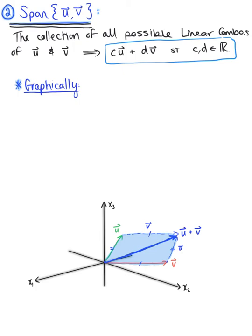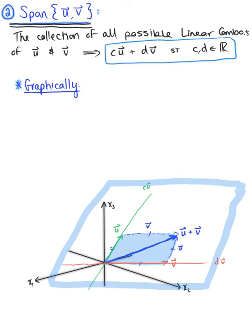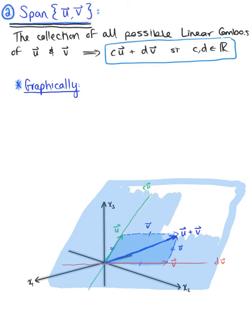We're shading in all those possible linear combinations within the parallelogram, starting to see what this span looks like graphically. We also have all possible scalar multiples of vector u — that's the line c times vector u — and all possible scalar multiples of vector v — that's the line d times vector v. Expanding further, the span of vector u and vector v is a plane in R3, passing through vector u, vector v, and the zero vector, and it contains the line through vector u and the zero vector as well as the line through vector v and the zero vector.